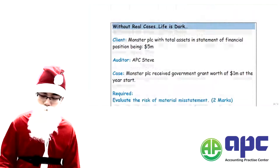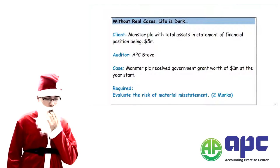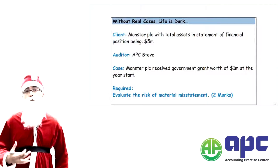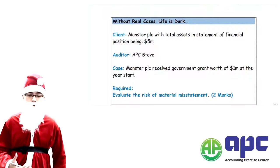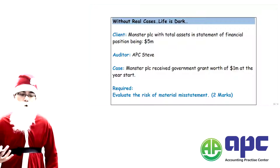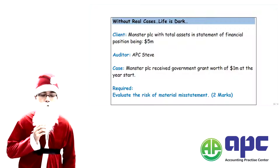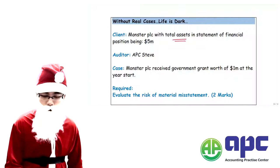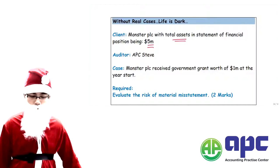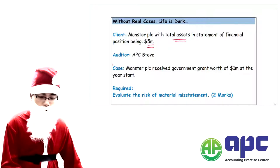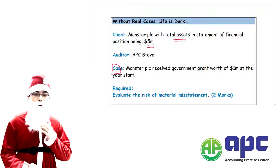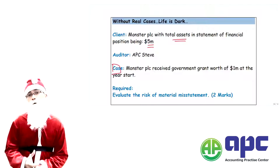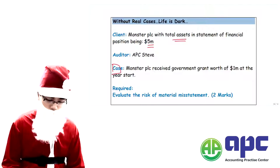So let's put this into a real question. The required is to evaluate the risk of material misstatement. We are the auditor — APC Steve is the auditor — and the client is called Monster POC with total assets worth $5 million. The case is that Monster POC received a government grant of $1 million at the year start.